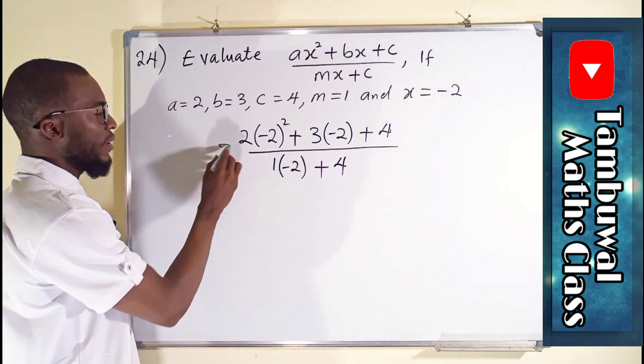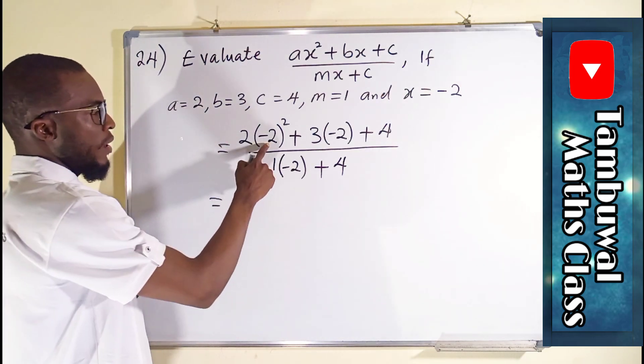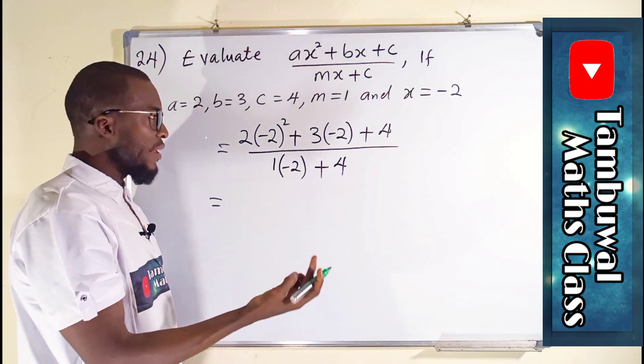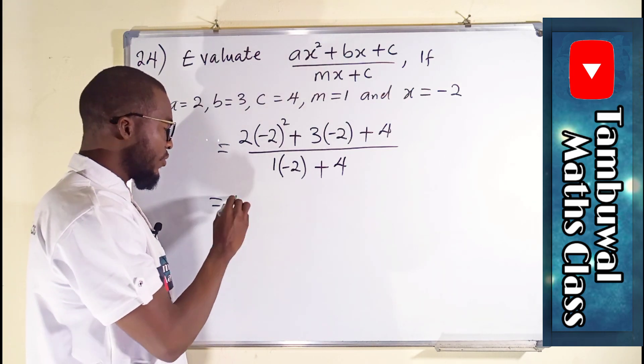So now let us simplify. Negative 2 squared is negative 2 times negative 2, which is 4.